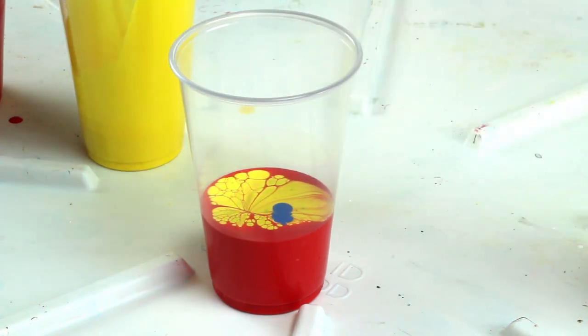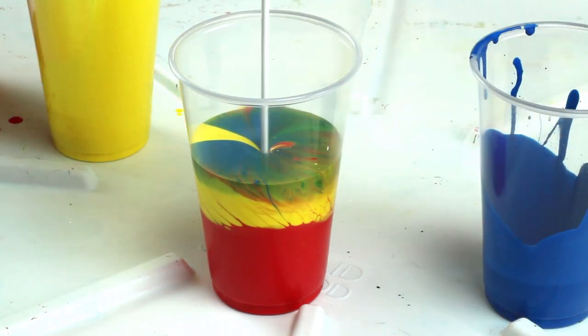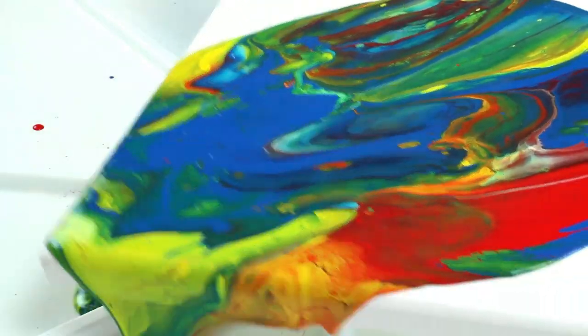As you can see, cells are already beginning to form in the paint. Check out our basic dirty pour video for some basic pouring techniques.